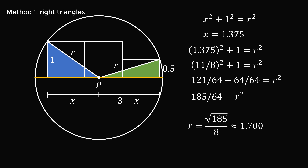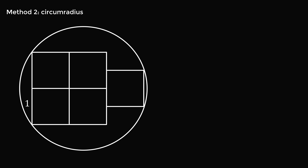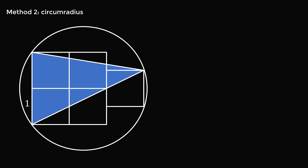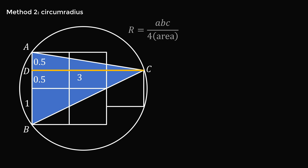And that's one way you can solve the problem. Here is another method: we can solve this using the formula for the circumradius of a triangle. Which triangle are we going to use? Let's construct triangle ABC where AB is two sides of the square and C is the upper point of the square on the right.